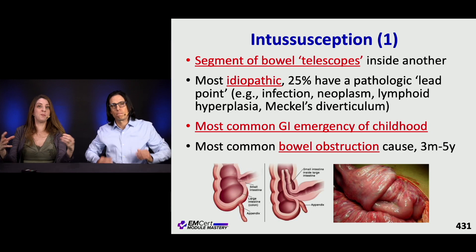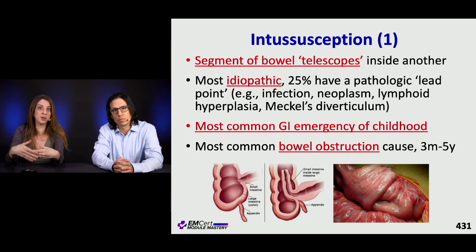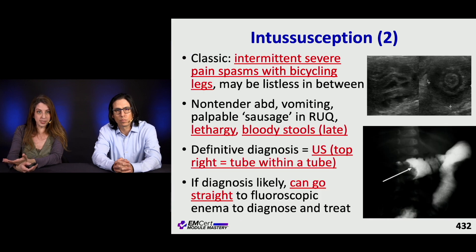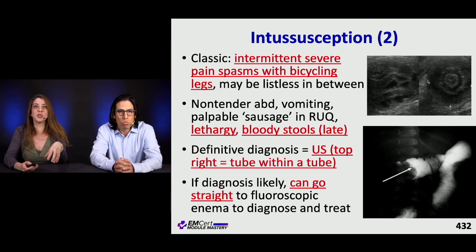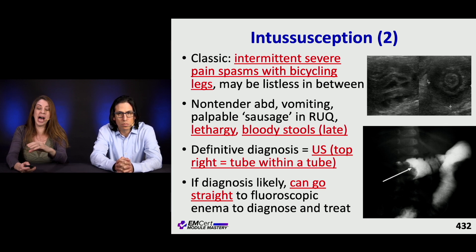Intussusception is when bowel telescopes inside itself. Most of the time it's idiopathic, but about a quarter can have a pathologic lead point — particularly in older patients, this can indicate an underlying neoplasm. It is the most common GI emergency of childhood and the most common cause of bowel obstruction in kids aged three months to five years. These kids can have intermittent severe pain — drawing their legs up — then in between, may have no pain or be listless. Their abdomen can be non-tender, they can have vomiting, and you can feel a palpable sausage, typically in the right upper quadrant. Bloody stools and lethargy are late findings.